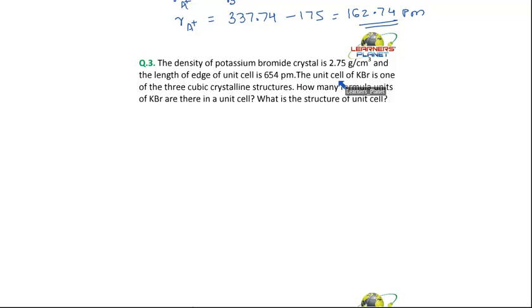The unit cell of KBr is one of the three cubic crystalline structures, that is it can be simple cubic, body-centered cubic, or face-centered cubic. How many formula units of KBr are there in a unit cell? What is the structure of the unit cell?